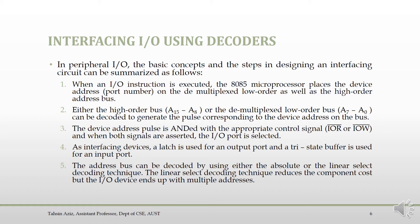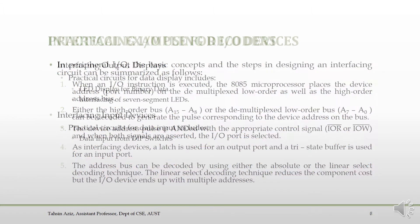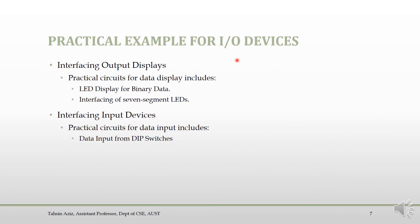There are two different decoding techniques: absolute decoding and partial decoding. In absolute decoding, all address lines are decoded with no don't-care conditions. If there are don't-care conditions, then you have partial decoding. Output devices include LED display for binary data and 7-segment display interface, while input devices use DIP switches for data input.